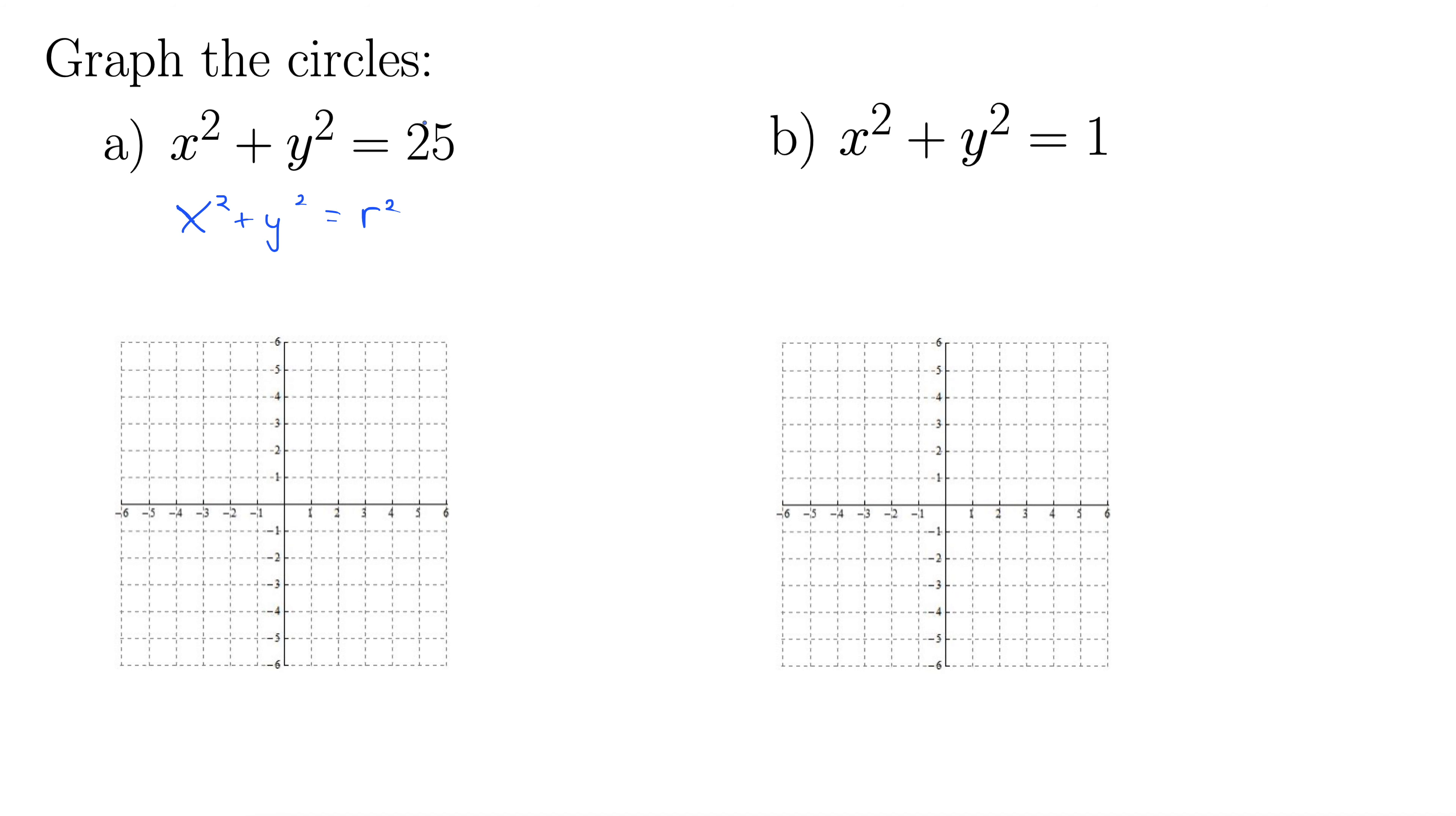Right, so you can usually look right at whatever number is out here, take the square root of it, and it gives you the radius. So there's 5 for the radius. Don't worry about the plus or minus in this case. Just take the straight-up square root, and that gives us the radius.